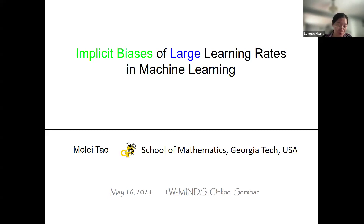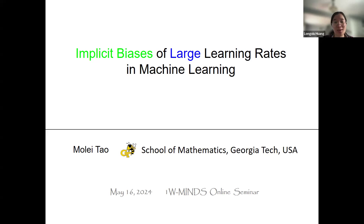His research interests are pretty broad. For example, he is now focused on understanding deep learning dynamics-inspired learning algorithms, AI, machine learning for science, scientific computing, numerical analysis, and so on. Today, Dr. Tao will talk about implicit bias of large learning rates in machine learning.